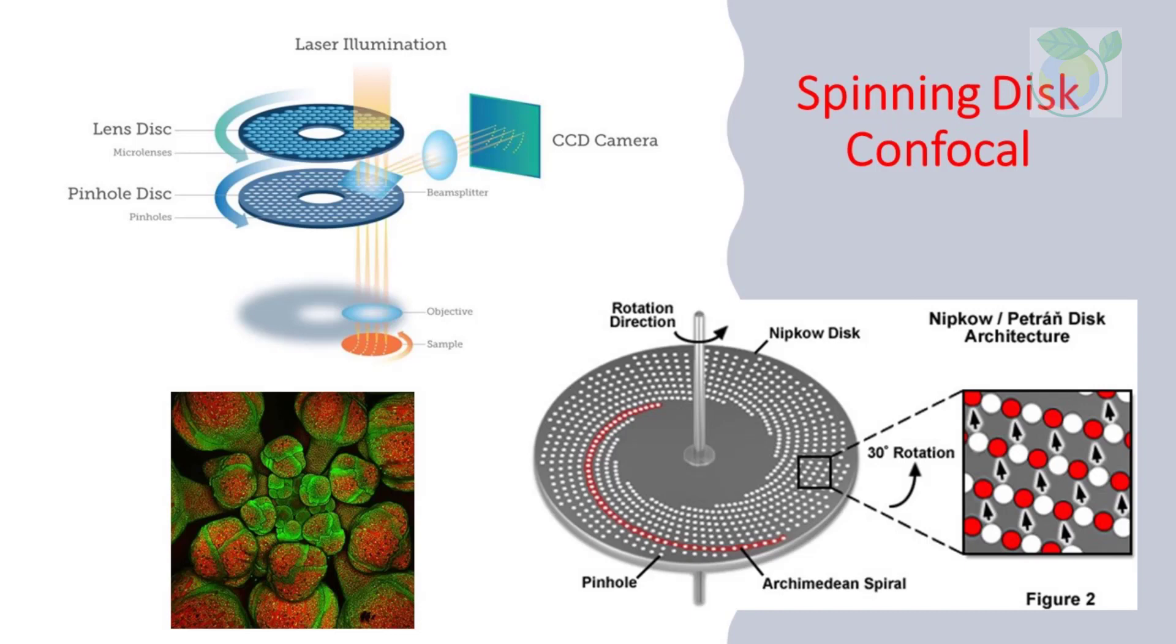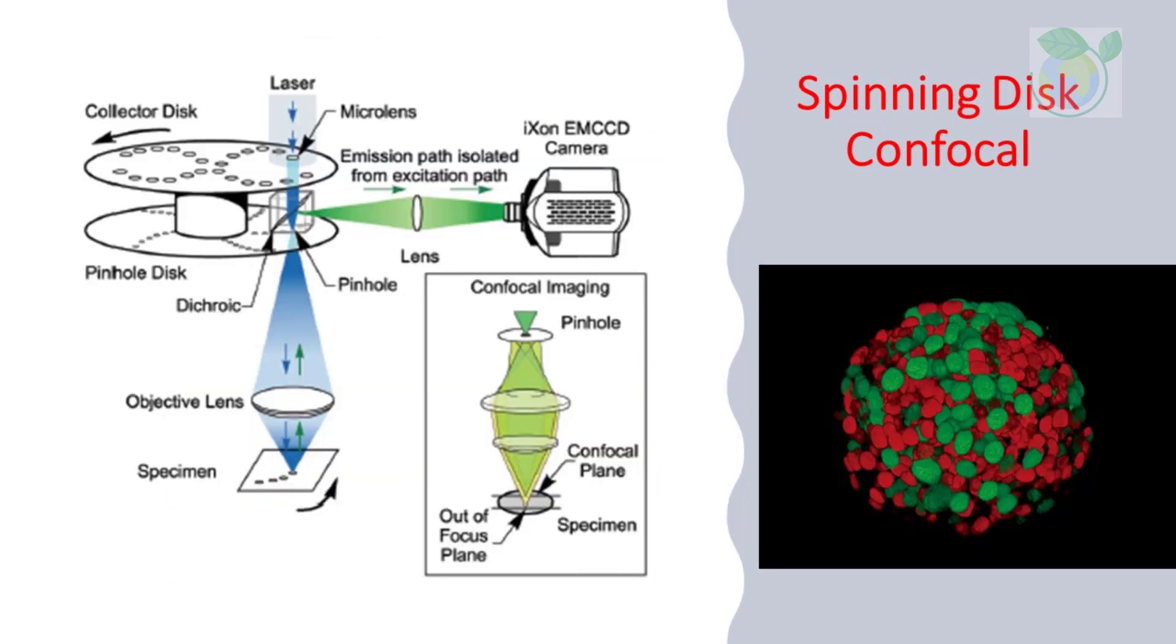Within the spinning disk confocal microscopy, there is an improved microlens enhanced or dual spinning disk confocal microscope that works under the same principles as spinning disk confocal microscopes, except a second spinning disk containing microlenses is placed before the spinning disk containing the pinholes. Every pinhole has an associated microlens. The microlenses act to capture a broad band of light and focus it into each pinhole, significantly increasing the amount of light directed into each pinhole.